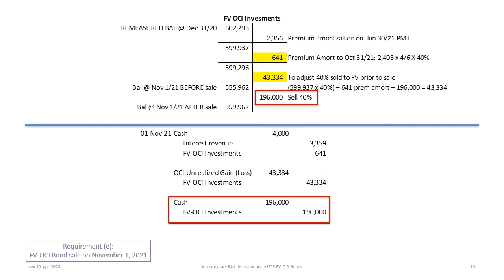The next entry is straightforward — recording the cash received on the sale. We debit cash $196,000 and credit FVOCI investments for $196,000. Combined with the $4,000 accrued interest received earlier, Tiberius receives $200,000 total: the face value of bonds sold at $98 plus accrued interest of $4,000 for holding those bonds until October 31, 2021.